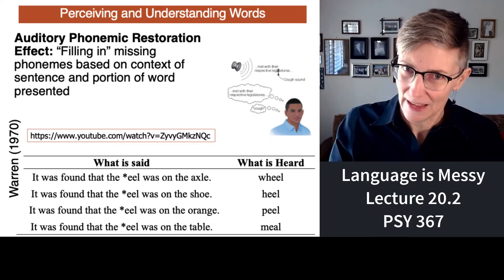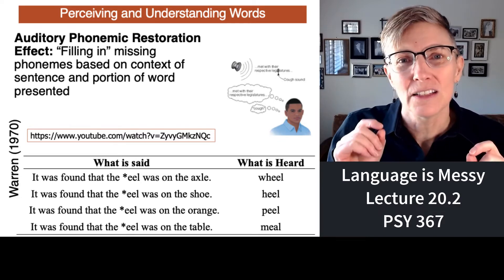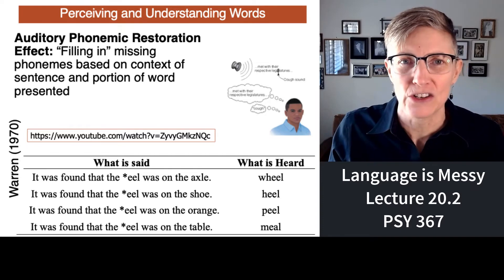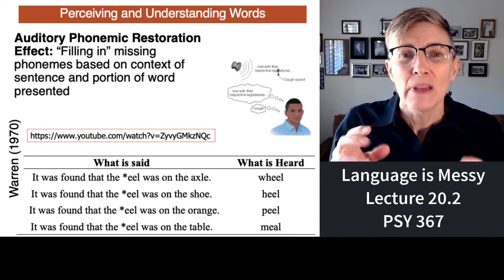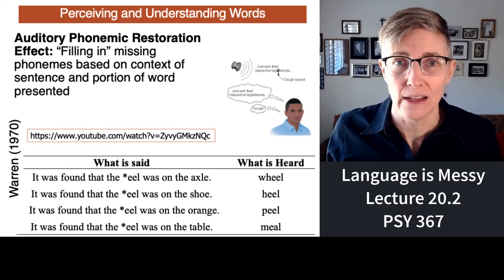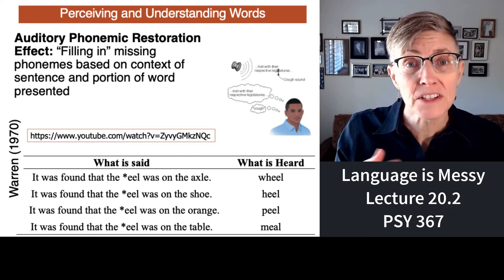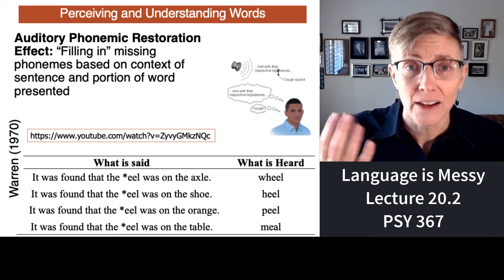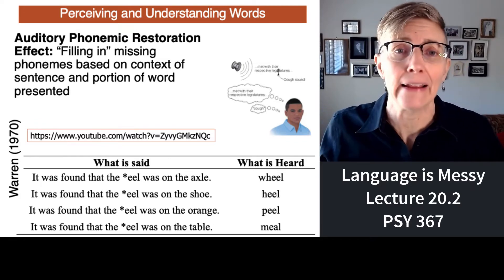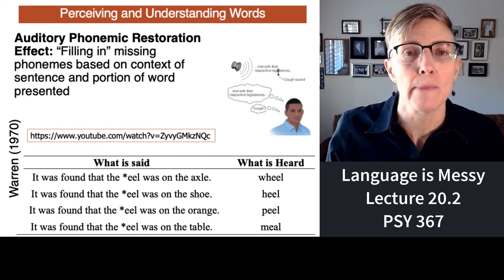It turns out we use context — we guess. There's something called the phonemic restoration effect. Basically, if you take out a phoneme, the listener will fill it right in. You could go to a noisy bar or nightclub, and the background noise blocks your ability to hear some phonemes, but we can still have a conversation because our brain automatically fills in missing sounds.